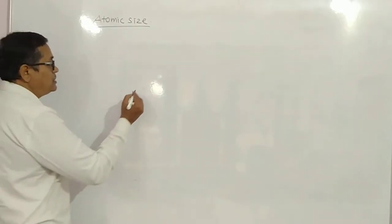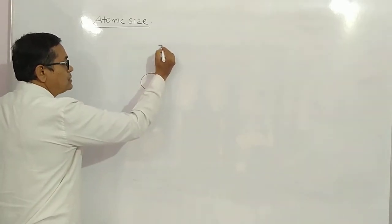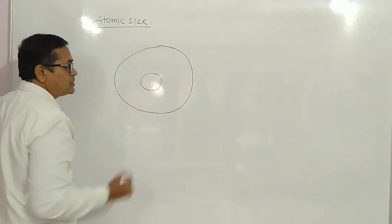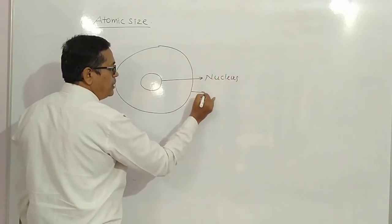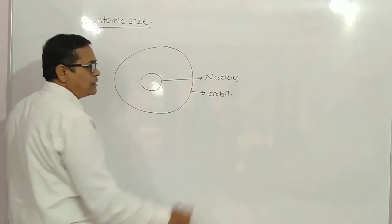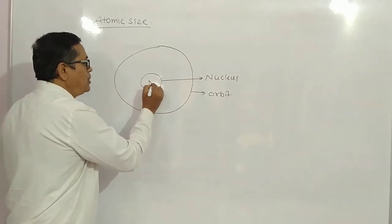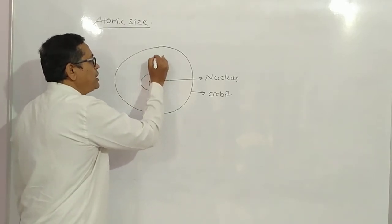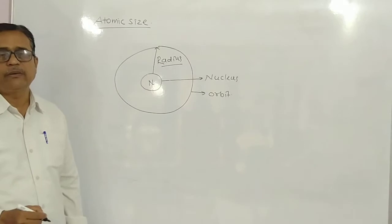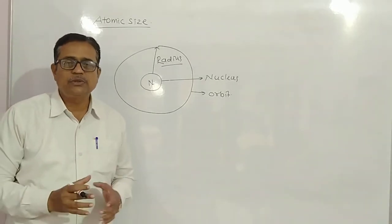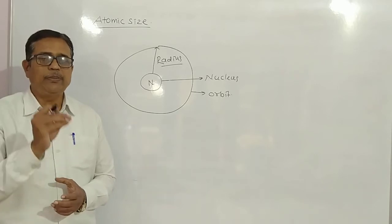Now let us understand what atomic size is. Here, the nucleus is at the center and around it there is an orbit — the outermost orbit. The distance between the nucleus and this outermost orbit is the radius of the atom, just like the radius of a circle is the distance between its center and any point on the circle. The size of the atom depends upon the size of its radius.